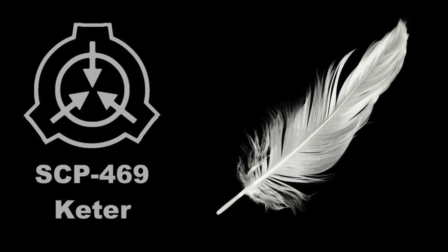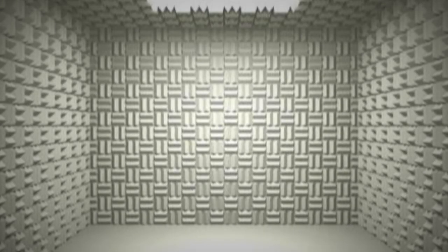SCP-469, Object Class Keter. Special Containment Procedures: Subject is to be kept in an airtight, soundproof containment chamber 15.24x15.24x15.24m until a viable termination method is available.